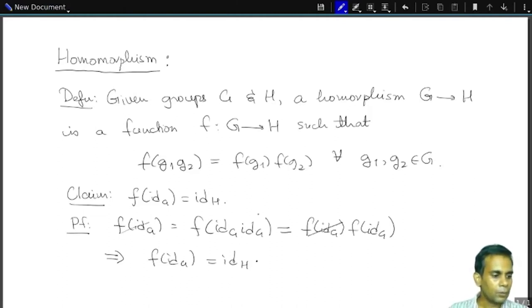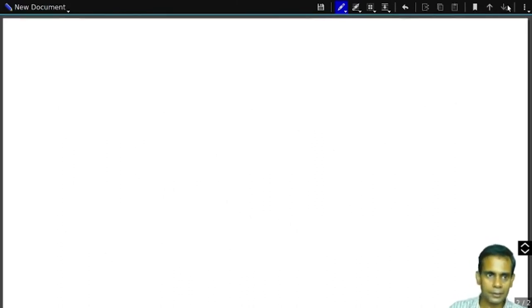Okay, now another property of group homomorphisms is that they preserve inverses. So F of X inverse is equal to F of X inverse for every X in G.